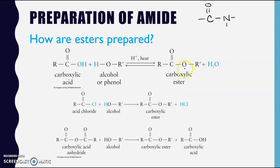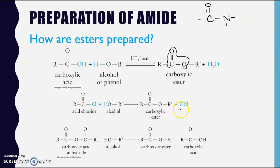We can react a carboxylic acid with an alcohol in a reversible reaction to get an ester and water as the product. Notice the similarity between the functional group of an ester and the functional group of an amide - the difference really is just what type of element is attached. We could also react an acid chloride with an alcohol to get an ester, with HCl as a byproduct.